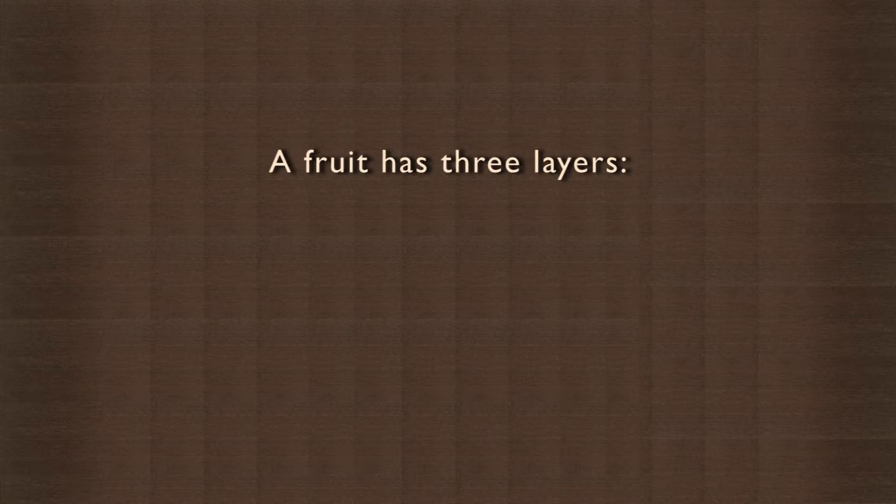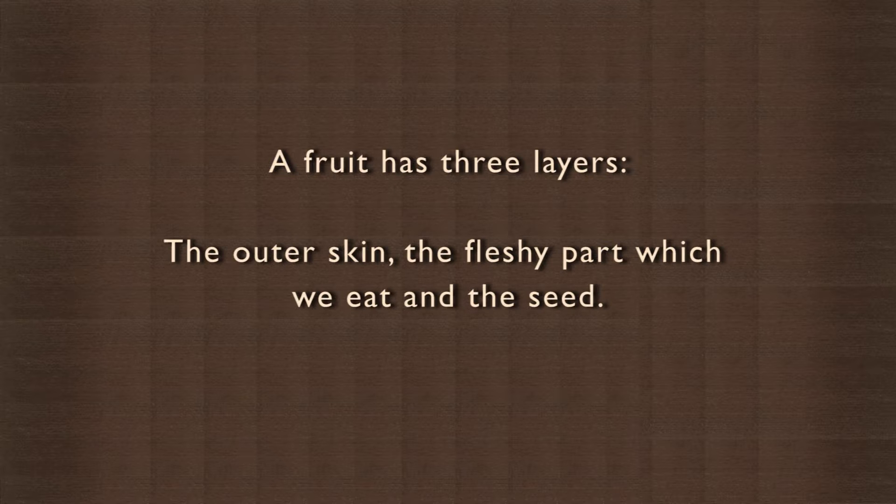Plants produce fruits for the purpose of reproduction. A fruit has three layers: the outer skin, the fleshy part which we eat, and the seed. The seed grows inside the fruit. Seeds are used for reproduction.